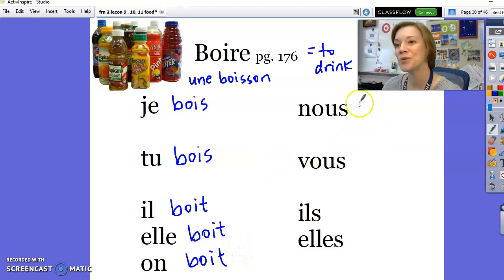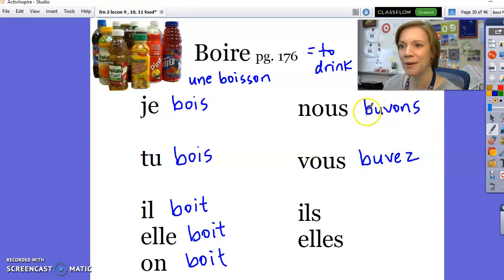And now we get over to nous and vous. Nous buvons. Vous buvez. Something has changed. Here we have a totally different spelling at the beginning. Instead of bois, bois, bois, bois, bois, now we're getting into buvons, buvez. B-U. But still with the familiar O-N-S. Easy.